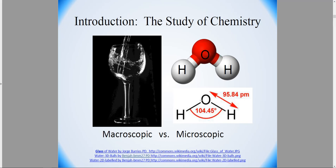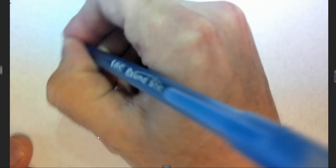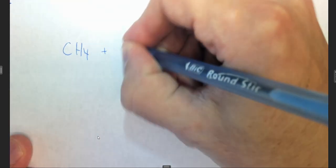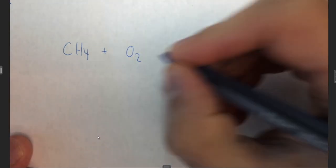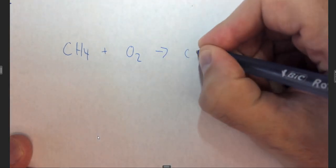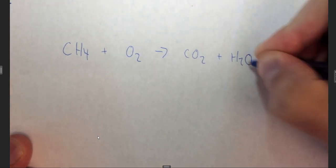One last example that I want to show you is an example of a combustion reaction. So in a combustion reaction, we could have a hydrocarbon, like for example CH4, which is methane. We can add to it oxygen, which is found in the atmosphere, and we can make more stable molecules, carbon dioxide and water.